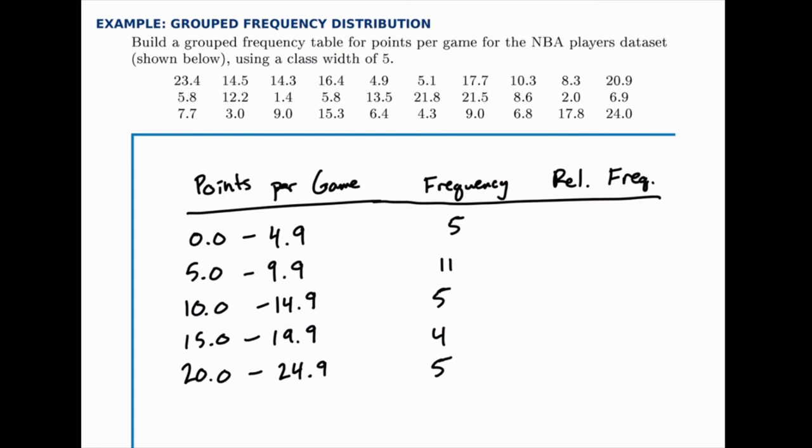And then if we divide each of these by 30 to get the relative frequency, 5 divided by 30 is 0.16 repeating. So you can round that to 0.167 or 16.7%. And then 11 out of 30, we could round to 36.7%. 5 out of 30, again, is 16.7%. And then 4 out of 30, we could round to 13.3% to get the relative frequency for each.